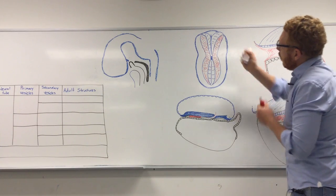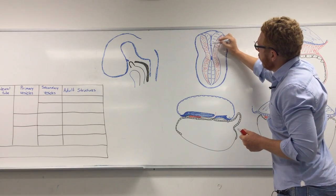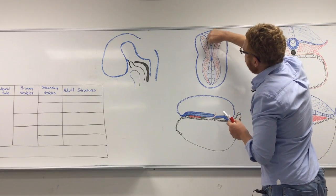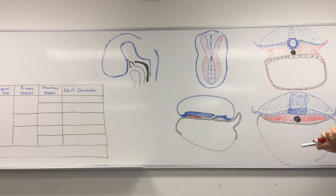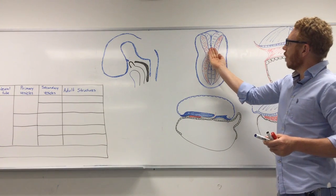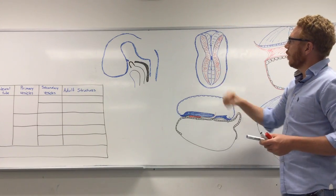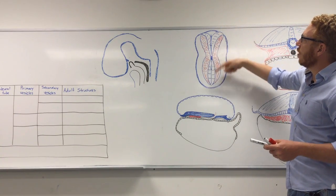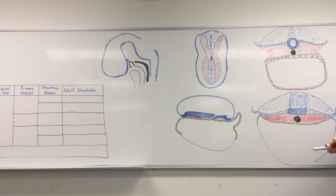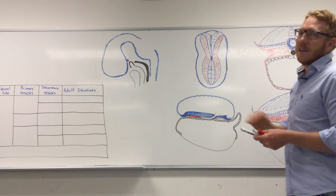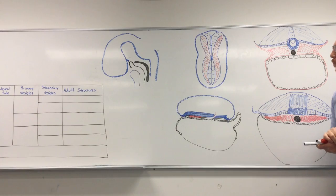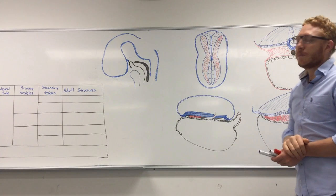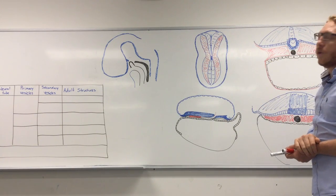This closure will start to zip shut both cranially and caudally. As it starts to zip shut, there are two ends left open, which allows communication between the neural tube and the amniotic cavity — cycling through with amniotic fluid or the future CSF that will be made in that tube. The top end, before it closes, is called the cranial neuropore, and the bottom end is called the caudal neuropore.